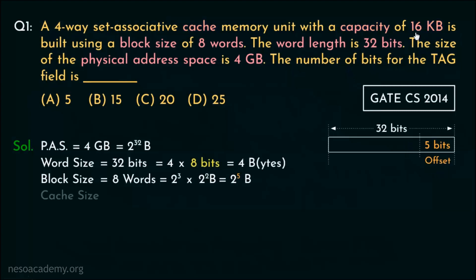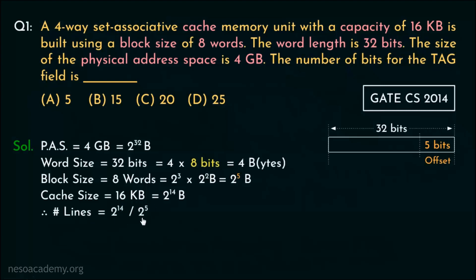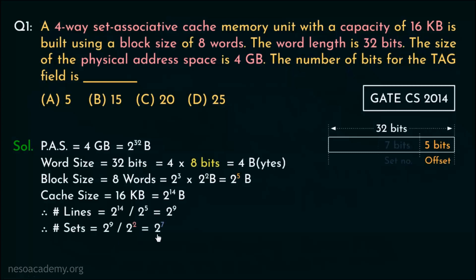The cache has a capacity of 16 kilobytes, which in bytes is 2 to the power 14, because 16 is 2 to the power 4 and kilobyte is 2 to the power 10. To find the number of lines inside the cache, we divide the cache size (2 to the power 14) by the block size (2 to the power 5), giving us 2 to the power 9 lines. Since it's a 4-way set associative cache, the number of sets is found by dividing 2 to the power 9 by 4 (which is 2 squared), giving us 2 to the power 7.